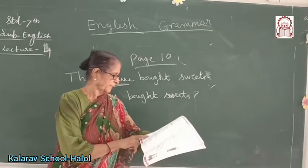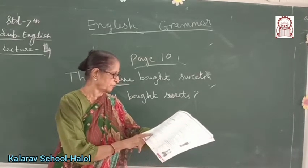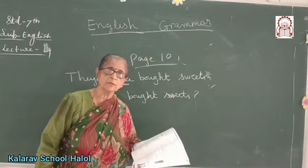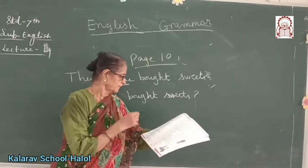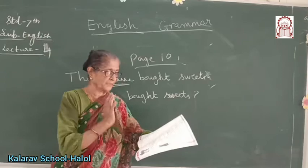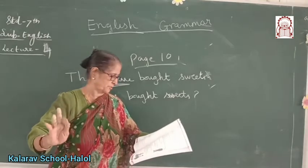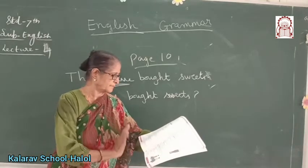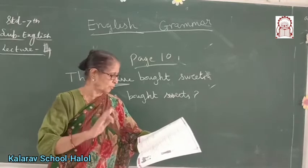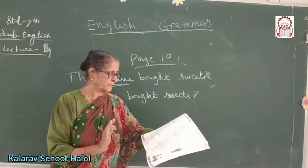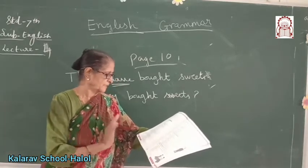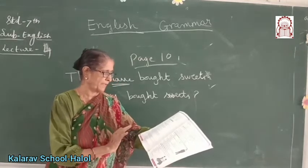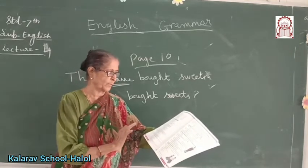Now, the above sentence is an example of a yes or no question. We cannot use a WH question here. A yes or no question is one that can be answered in yes or no, and such a question begins with an auxiliary verb. Some auxiliary verbs are: is, do, have, can, was, were, had — which help other words to form tenses and voices.